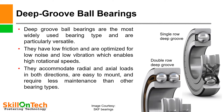A picture of a single row and double row deep groove ball bearing is shown. Deep groove ball bearings are the most widely used bearing type and are particularly versatile. They have low friction and are optimized for low noise and low vibration, enabling high rotational speeds. These bearings accommodate radial and axial loads in both directions, are easy to mount, and require less maintenance than other bearing types.